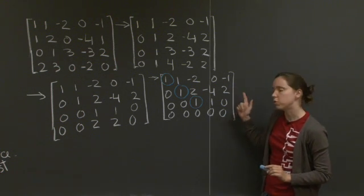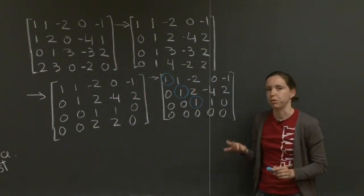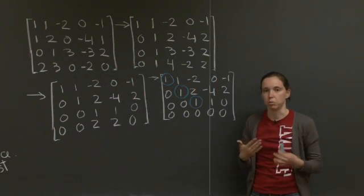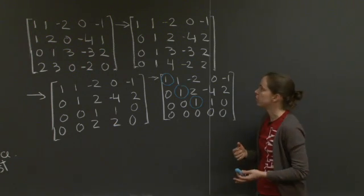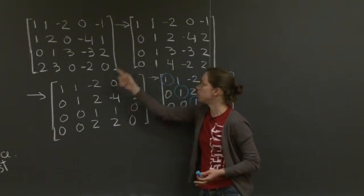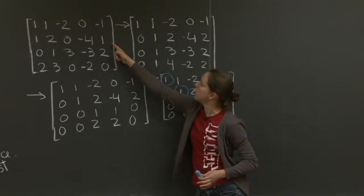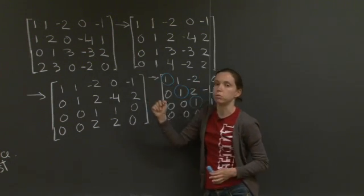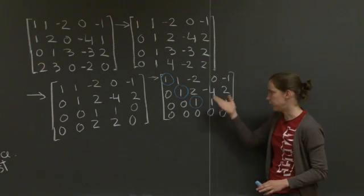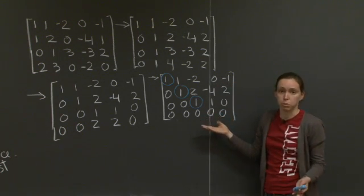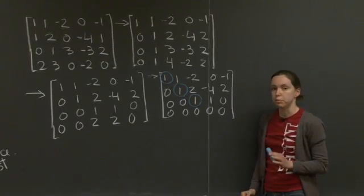And in fact, these rows still span the same space that the initial four rows did. Because when you do elimination, all that you're doing is recombining your rows by doing linear combinations of them. So for example, your first row stayed the same throughout. Your second row was replaced by row 2 minus row 1. But it's really still spanning the same space. And it goes on. And then the fourth row, it turns out, was useless. You only needed the first three.